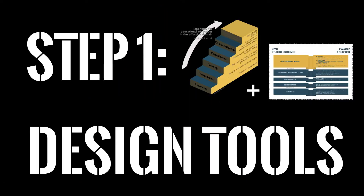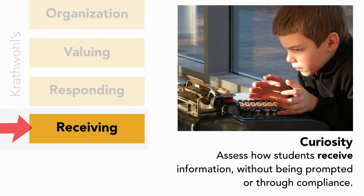Now you've seen Krathwohl's taxonomy for the affective domain. We can also combine it with Keen Outcomes to develop educational objectives. You can assess how students receive information without being prompted or through compliance — it's part of curiosity. Do they seek out information? Can you design educational interventions that promote this behavior? We think so.